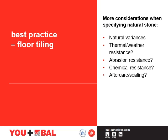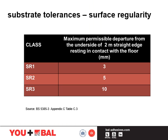Some more considerations when specifying natural stone. The one we haven't discussed yet is aftercare and sealing — we will discuss this later in more detail. Adequate preparation of the substrate is important for tiling. BS 5385 part 5 gives guidance on the tolerance of the finished floor level. It should be SR1 — a surface regularity of 3mm under a 2m straight edge. When checked with a 2m straight edge with 3mm feet at each end, any gap underneath that straight edge between points of contact should not exceed 6mm. Also, the straight edge should not be obstructed by the floor.